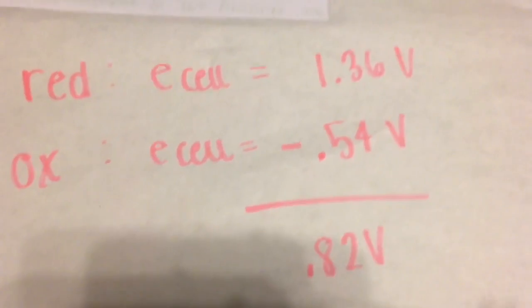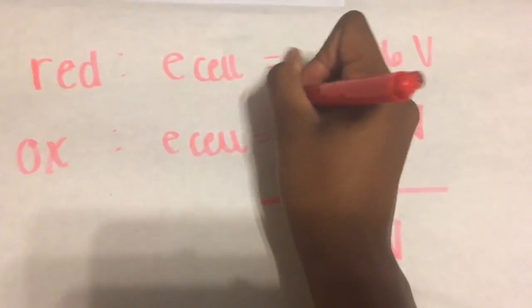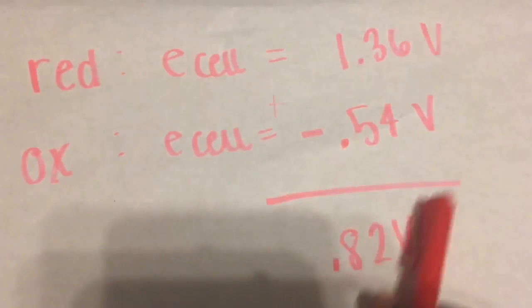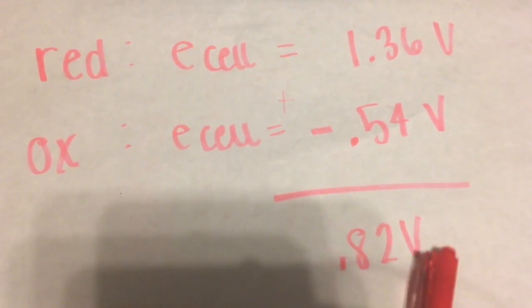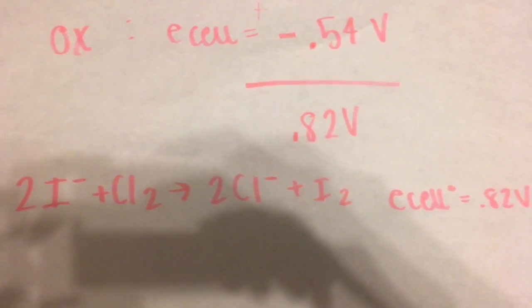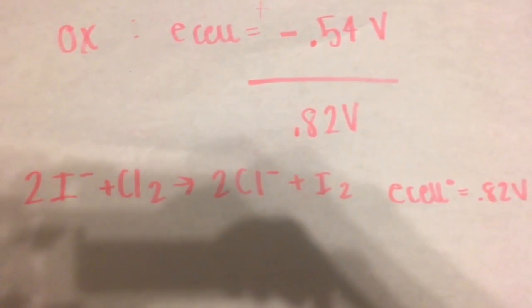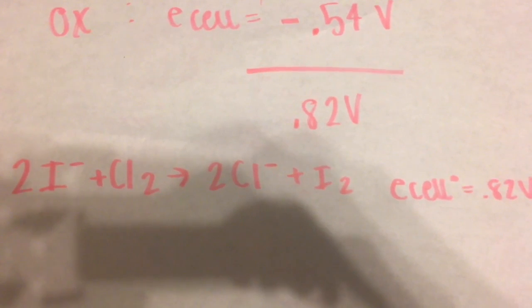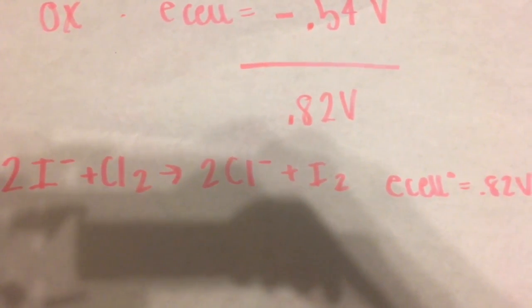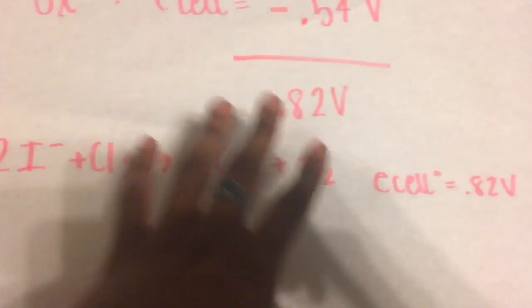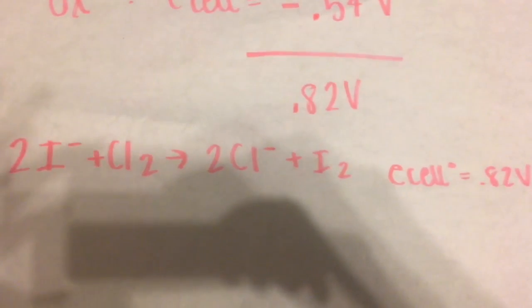So we just go ahead and add these values together. I'll put a little addition sign right there so we can remember. And then the sum of these two is 0.82 volts. So basically all of this work helps us find the E cell or the voltage that this reaction would produce. So here we have the ionic equation of the anode and the cathode and the volt that they would produce.